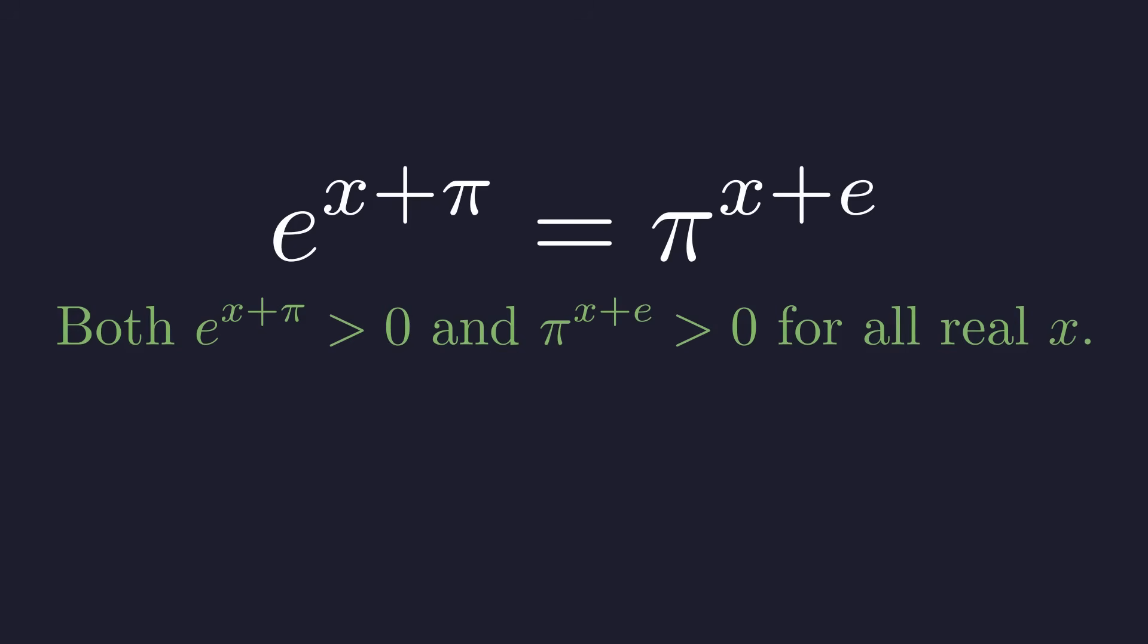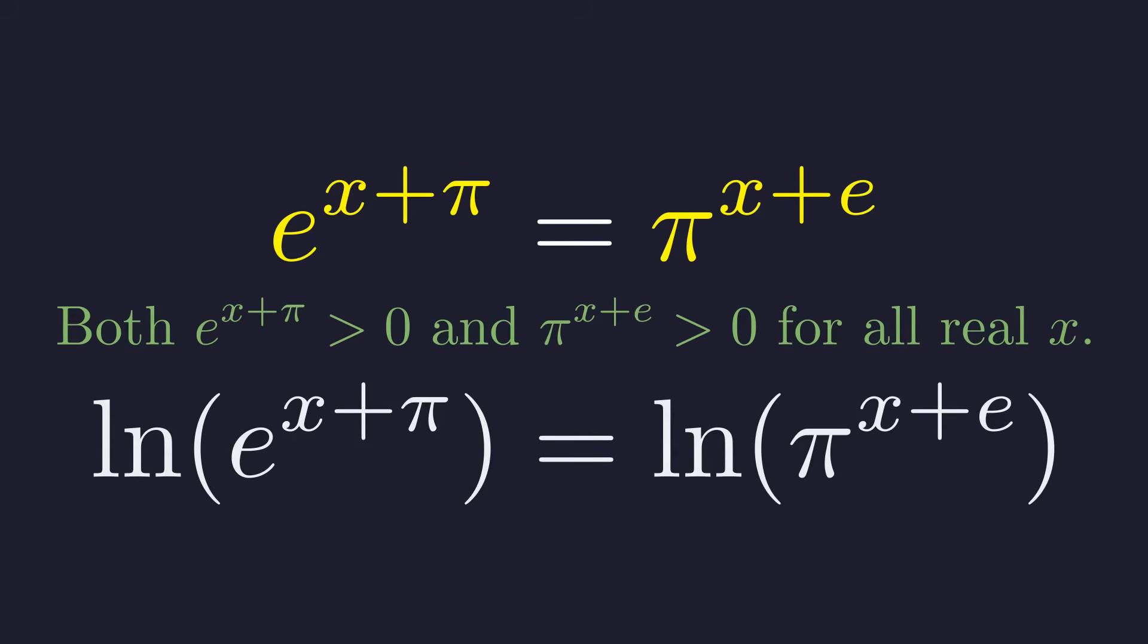This means taking the logarithm will be a valid step that preserves the equation without introducing any extraneous solutions. With that confirmed, we can take the natural logarithm of both sides. This will bring the variables down from the exponents where we can actually work with them. Applying the natural logarithm to both sides gives us this.